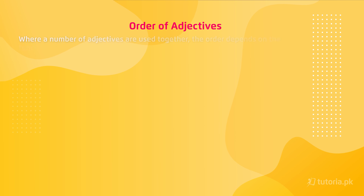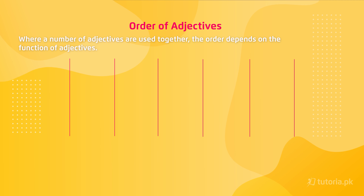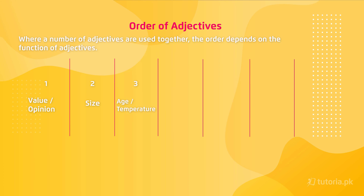Let's move on to order of adjectives. When you are using many adjectives in one sentence, you have to follow a certain order. The usual order is: first value or opinion, second size, third age or temperature, fourth shape, fifth colour, sixth origin, and seventh material.